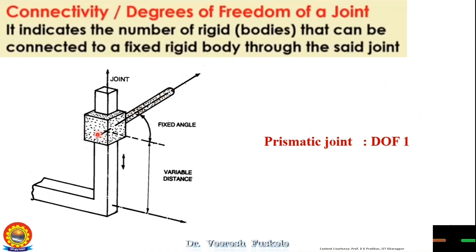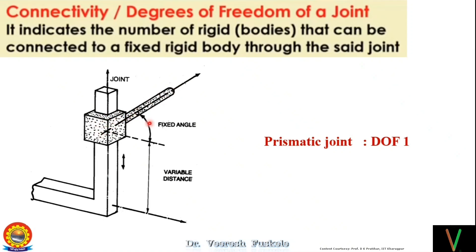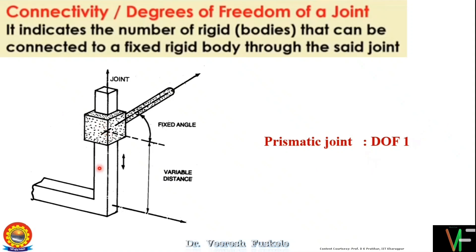This is the first type of joint, known as the linear joint or the prismatic joint, also called a sliding joint. You can see this is the input link and this is the output link. The angle is fixed so it cannot rotate, but it can only slide up and down. That's why it is known as the prismatic joint. The motion is only in one direction, so the degree of freedom is one.